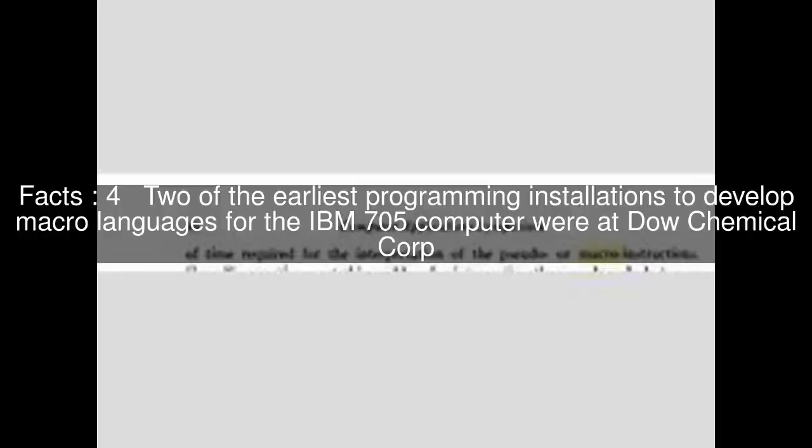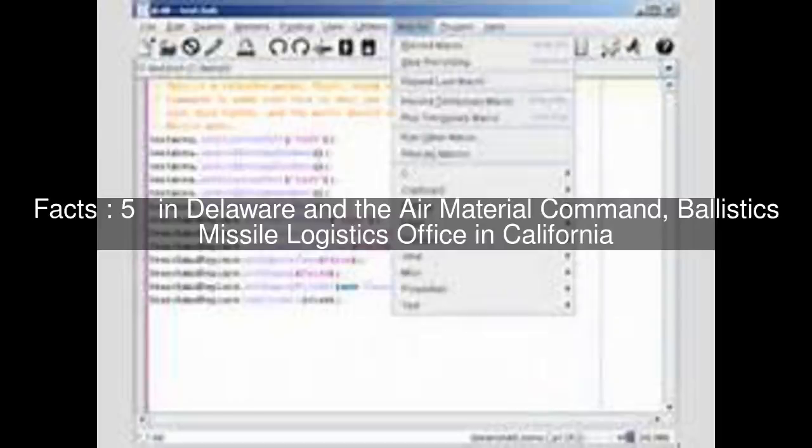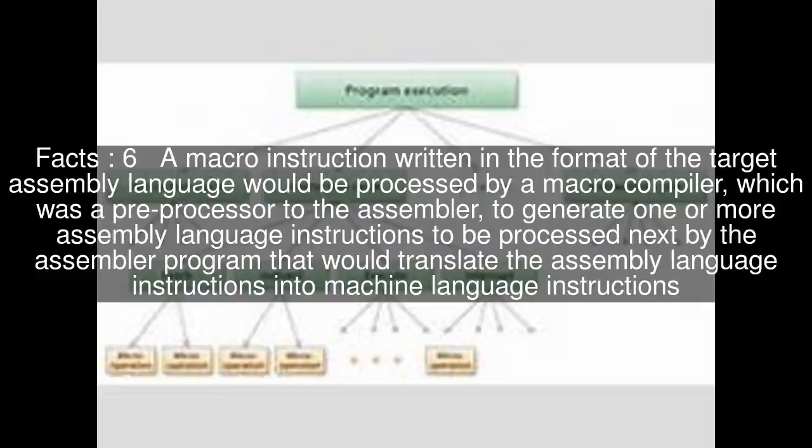Two of the earliest programming installations to develop macro languages for the IBM 705 computer were at Dow Chemical Corp. in Delaware and the Air Material Command, Ballistics Missile Logistics Office in California.